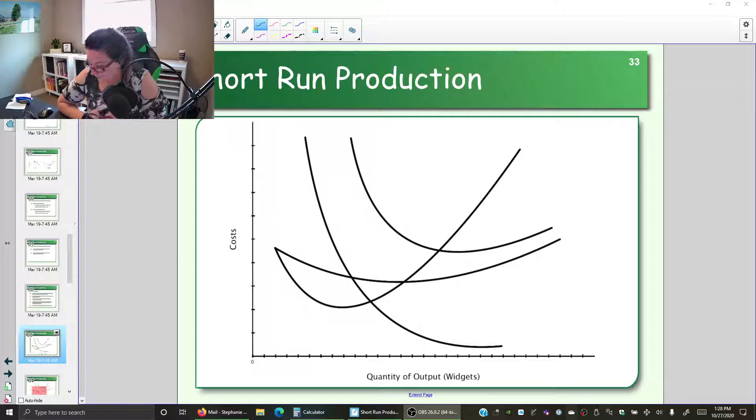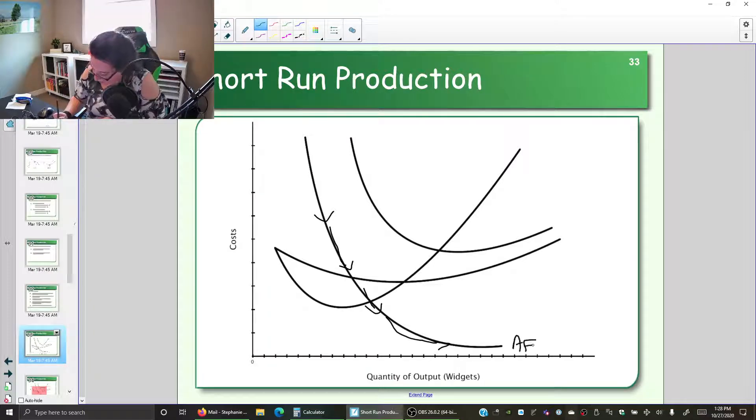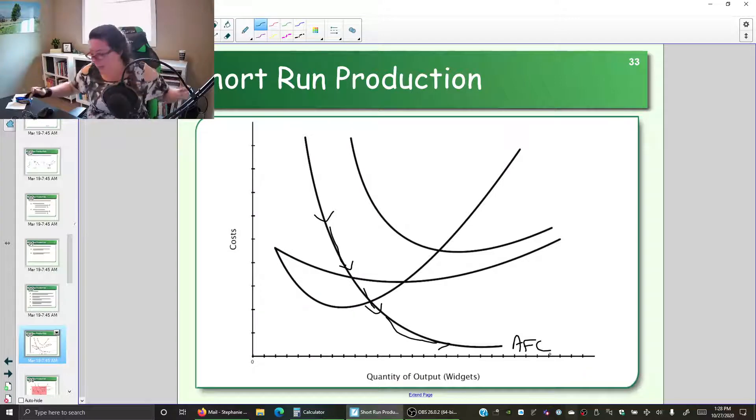Let's start with the one that goes down and continues to decline. Which cost curve decreases the more you produce? That one is the average fixed cost. Average fixed cost—remember, fixed cost does not change with the amount we produce. So the more we make, the more we can spread that out.